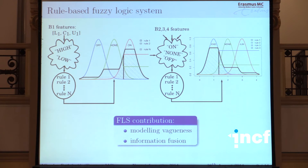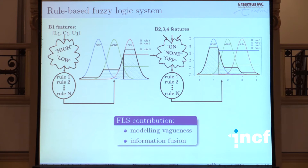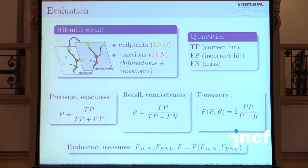Applied to this problem: we detect features per each of the streamlines L, C, and U, then quantify them as linguistic terms — each is either high or low to some degree. We apply a set of rules which are the core of the algorithm, and each streamline is expressed in a fuzzy way saying how much it is on, off, or none. There's another fuzzy logic system concatenated on top of that, and at the output for each pixel location of interest we get a fuzzy output giving the degree of belief that the point is a junction, nothing, or an endpoint. The nice thing about fuzzy logic is that it models uncertainty and performs non-linear information fusion.